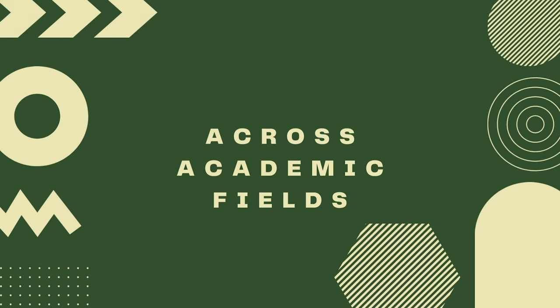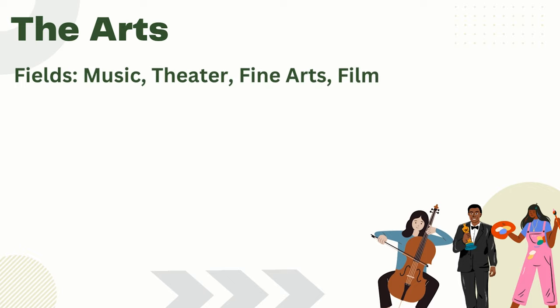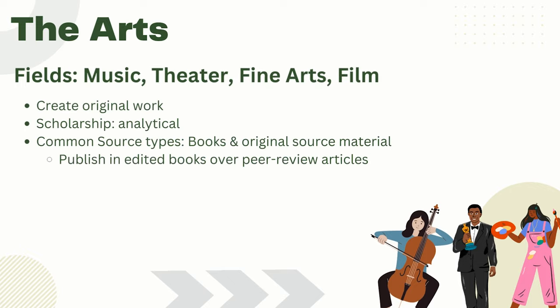Let's review each broad academic discipline and how peer review generally fits in with each. In the arts we have the fields of music, theater, fine arts, and film. Much of the work done in these fields is creating original work. The scholarship around these works is often analytical rather than experimental. Scholars in this field may also be more reliant on books and original source material rather than journal articles. In these cases, the process of peer review does not exist in book publishing. Instead, books usually go through a rigorous editing process.